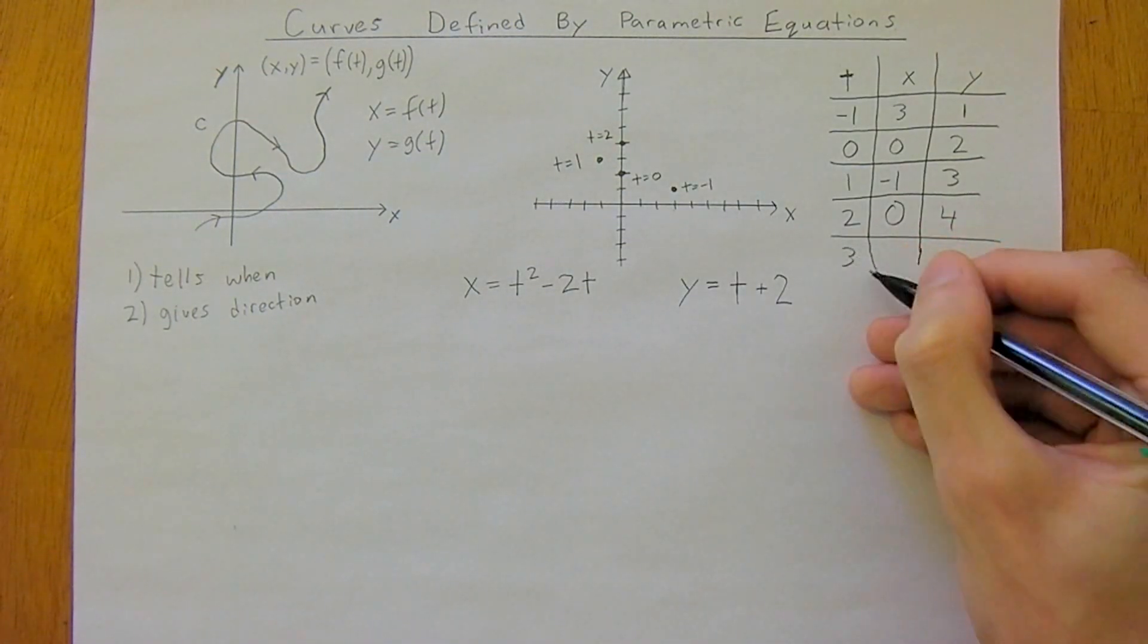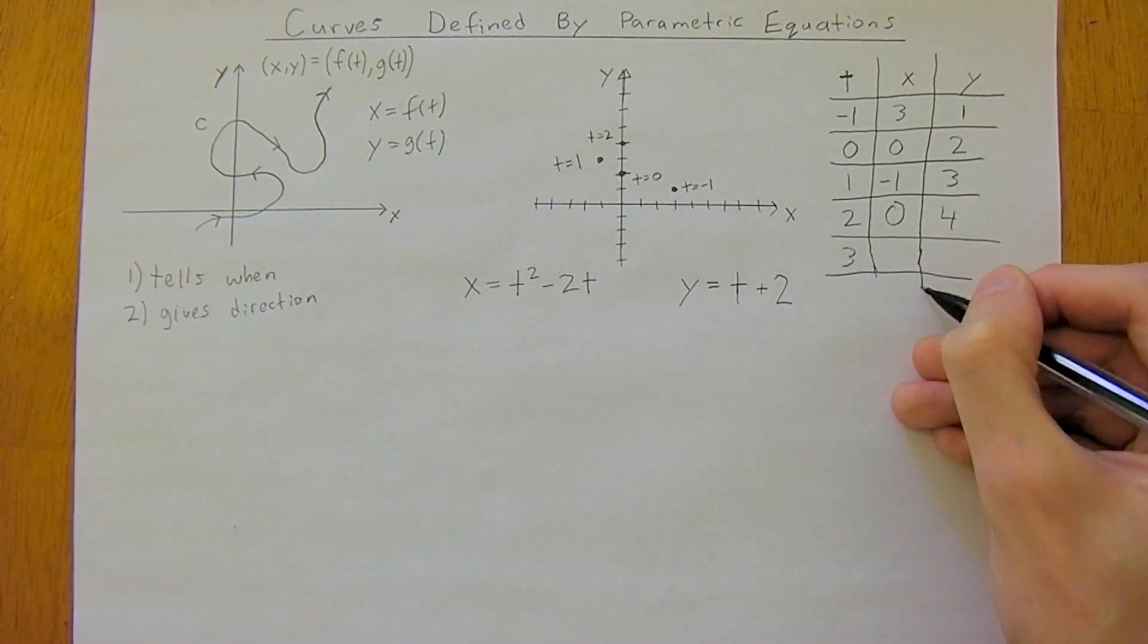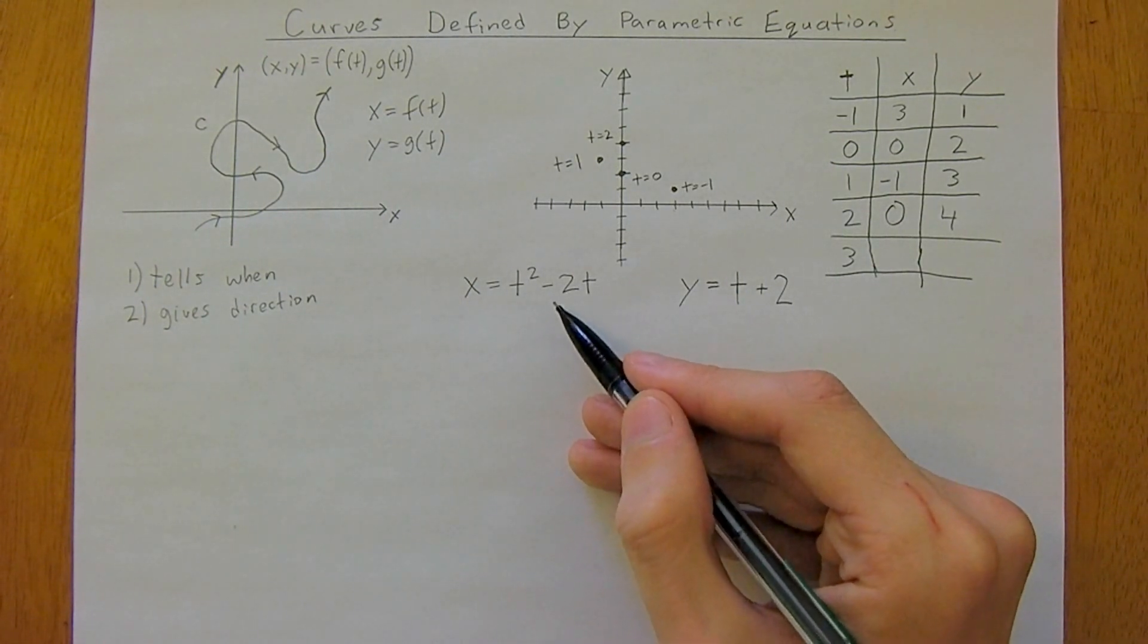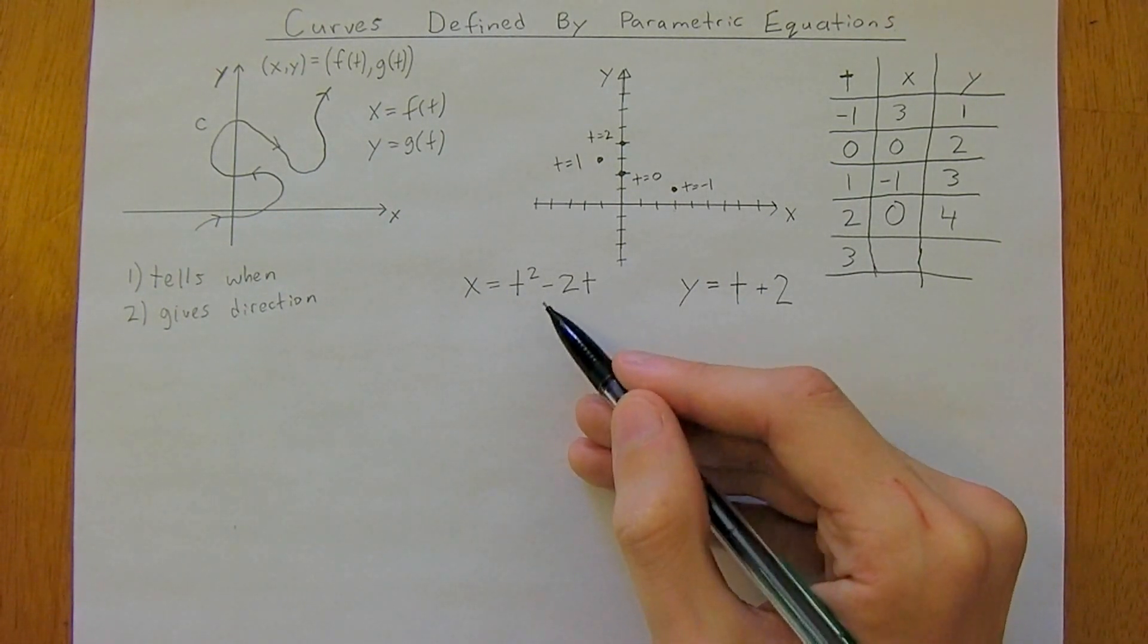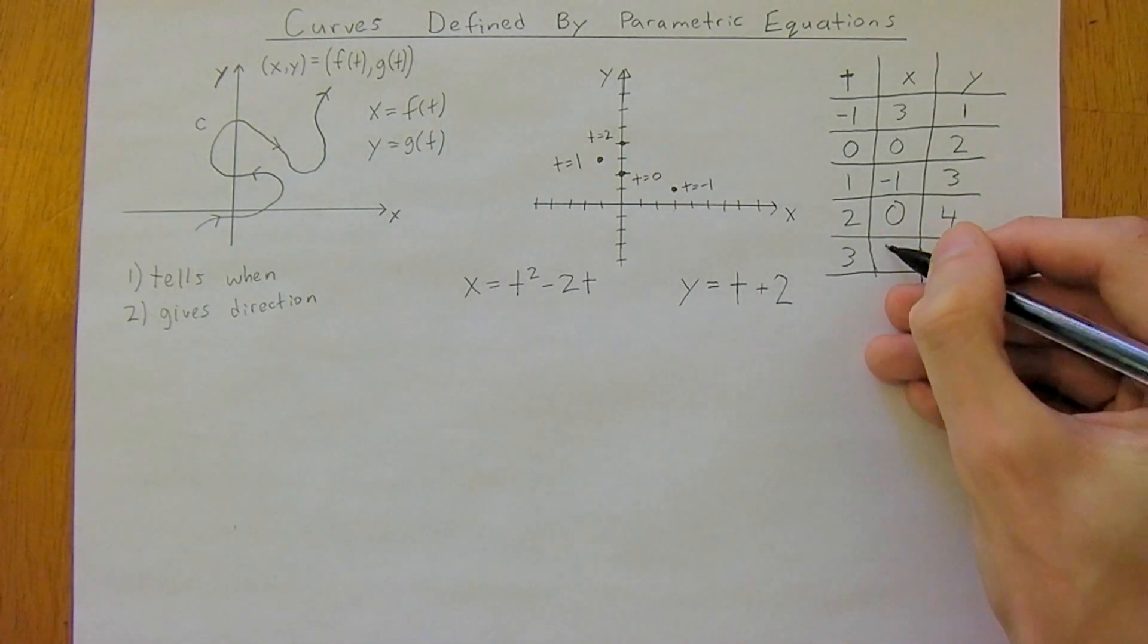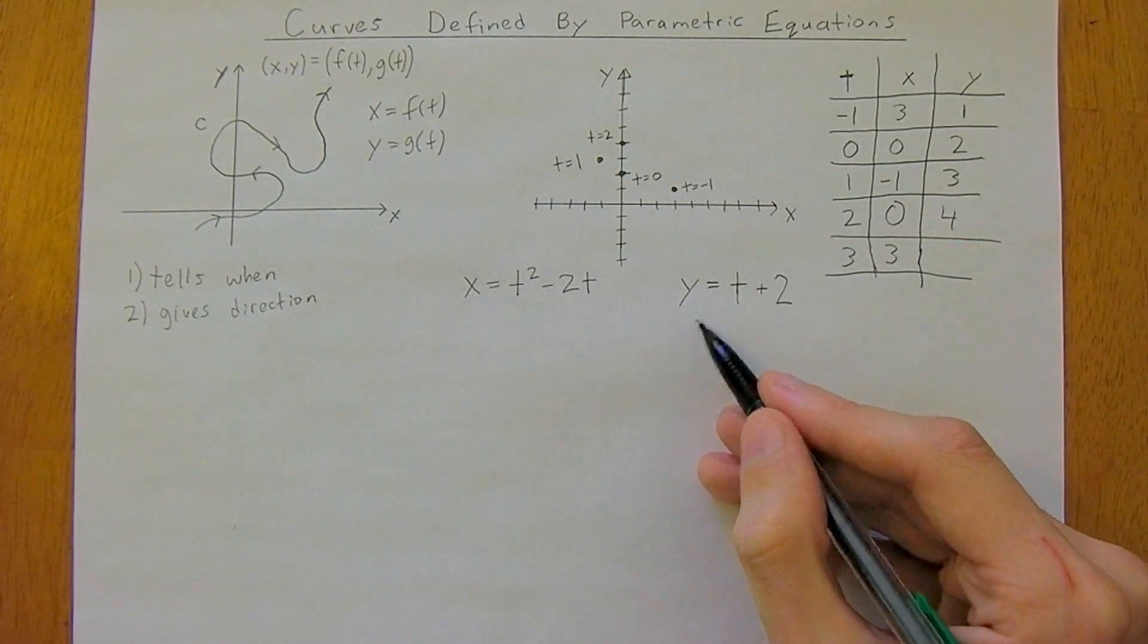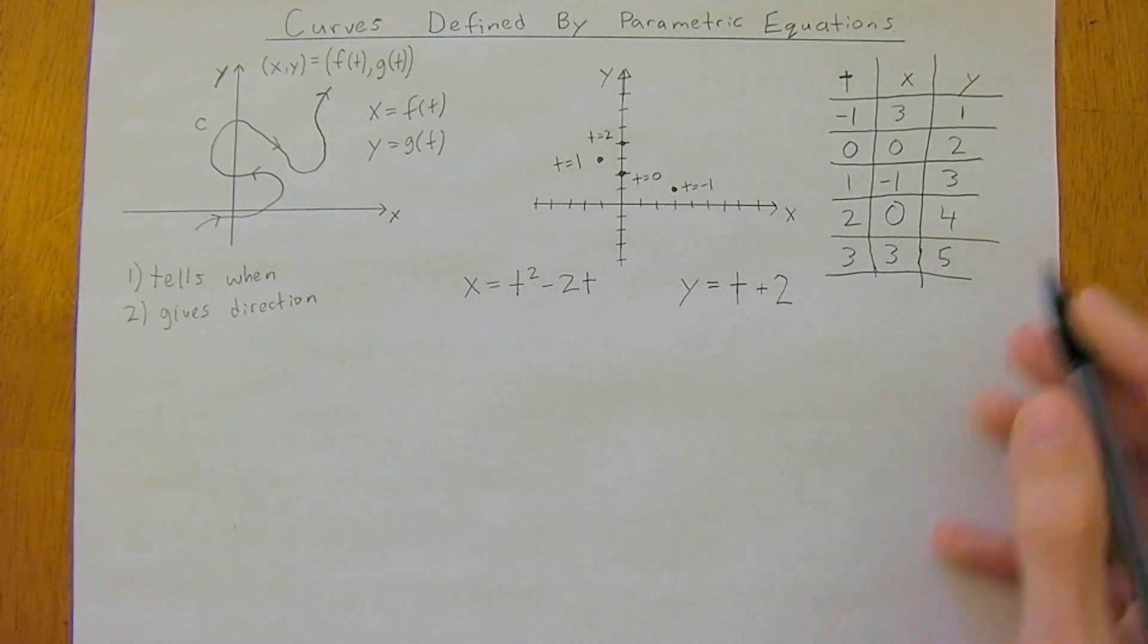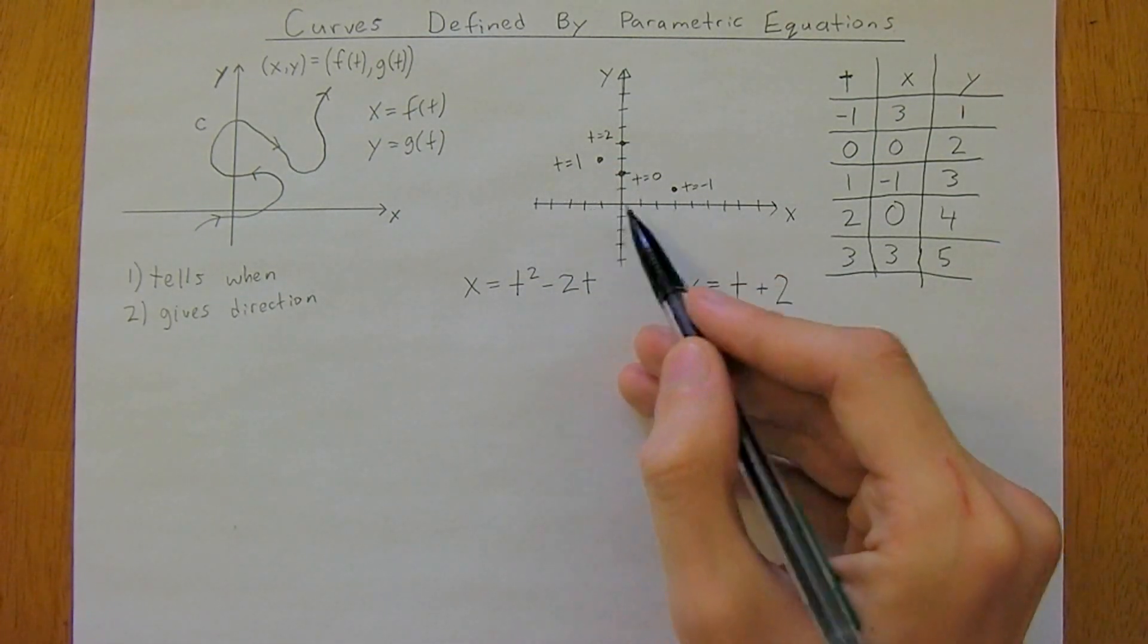Let's do one more. So 3 squared is 9 minus 2 times 3, which is 6. 9 minus 6, x is 3. And 3 plus 2, y is going to be 5.